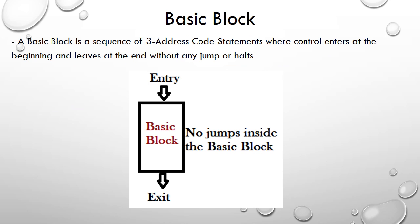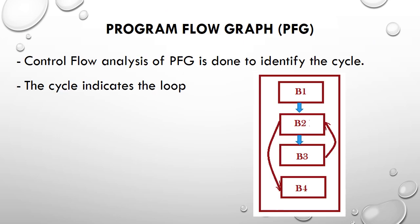A basic block is the elementary component in the program flow graph. A basic block is a sequence of three-address codes where control enters at the beginning and leaves at the end without any jump or halt. Inside a basic block there will be no jump statement — neither a conditional jump nor an unconditional jump inside the block.